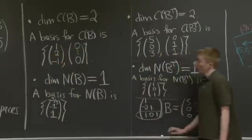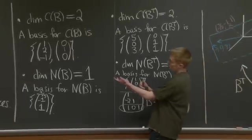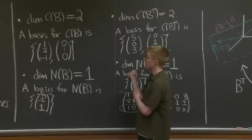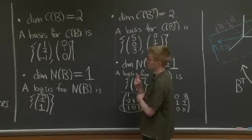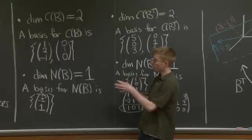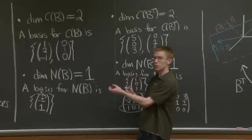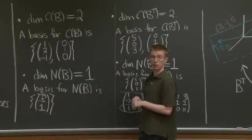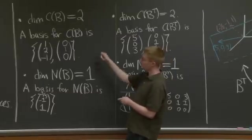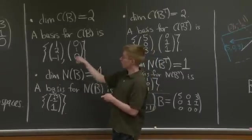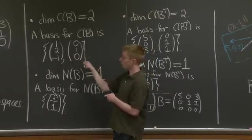OK, so we've found the dimension and basis for all of the four fundamental subspaces. Before I move on, I just want to recall which of the L matrix or the U matrix we used for each of these subspaces. So for the column space, we used columns, the pivot columns of the L matrix.